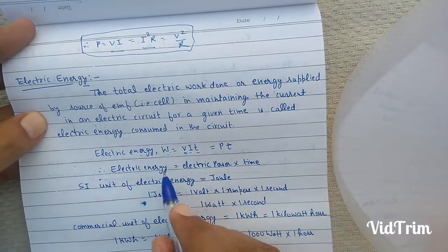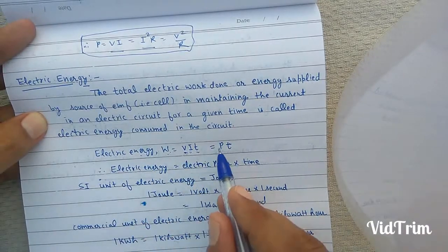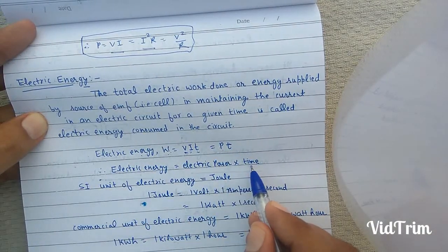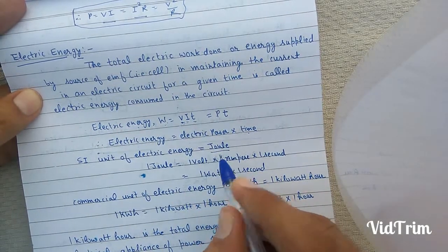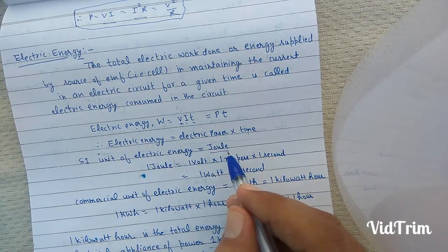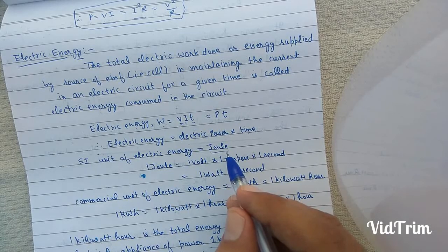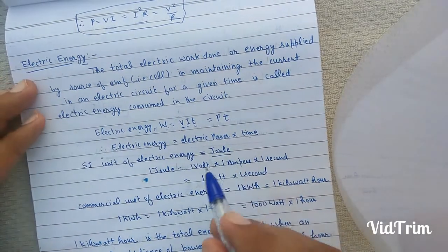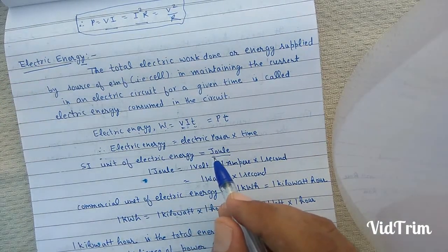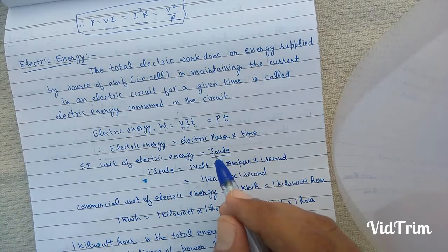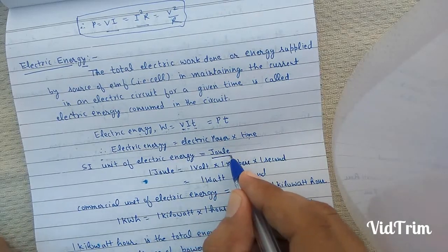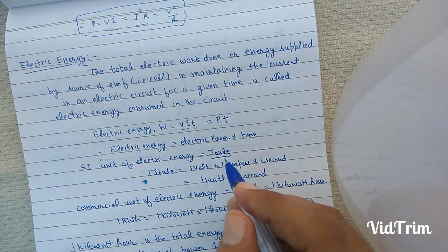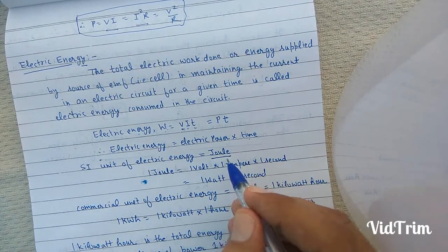Therefore, electrical energy is equal to electric power multiplied by time. The SI unit of electrical energy is joule — just as the SI unit of kinetic energy, potential energy, and mechanical energy is joule. Therefore, the SI unit of all types of energy is joule.